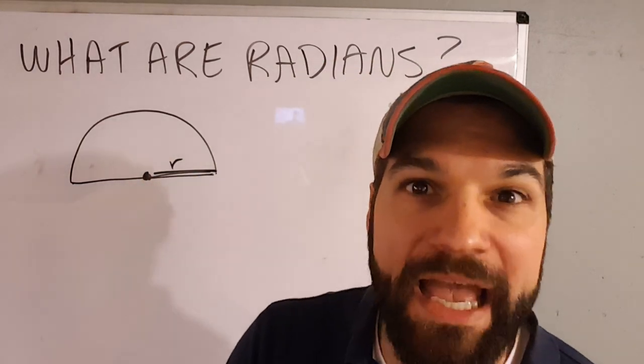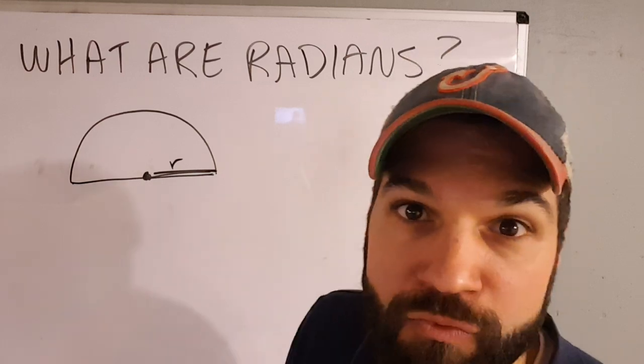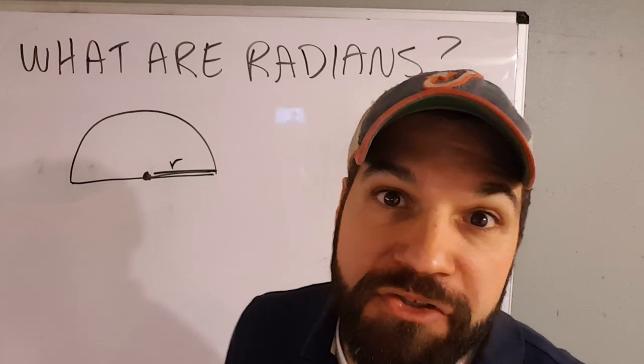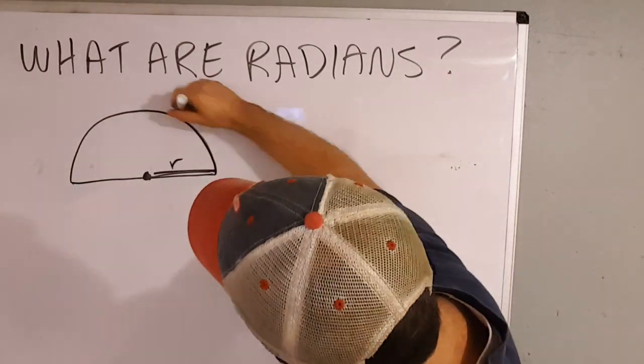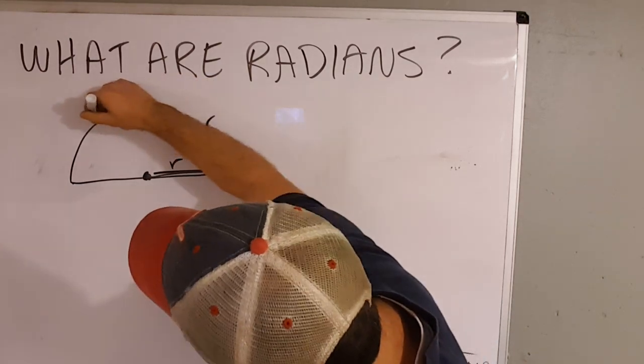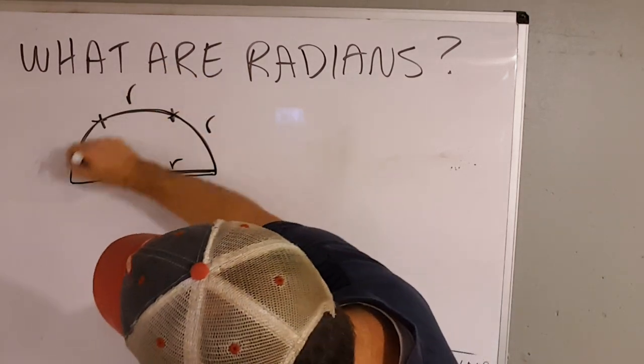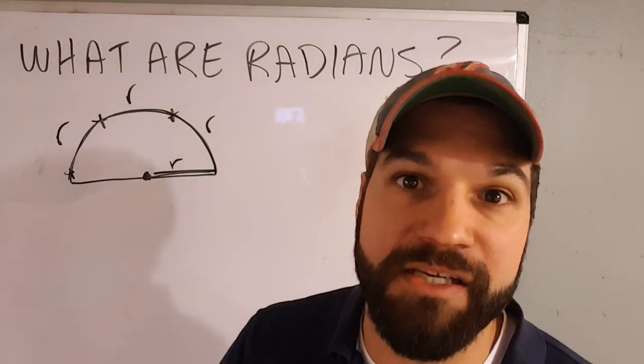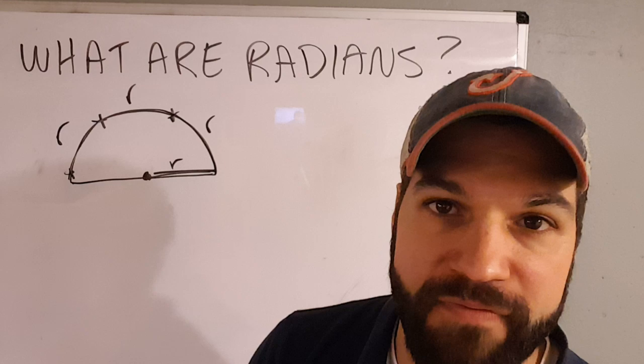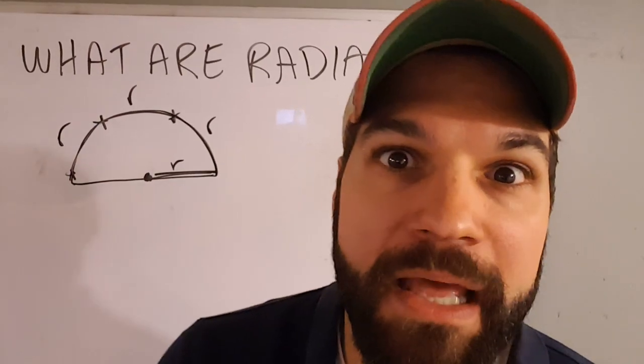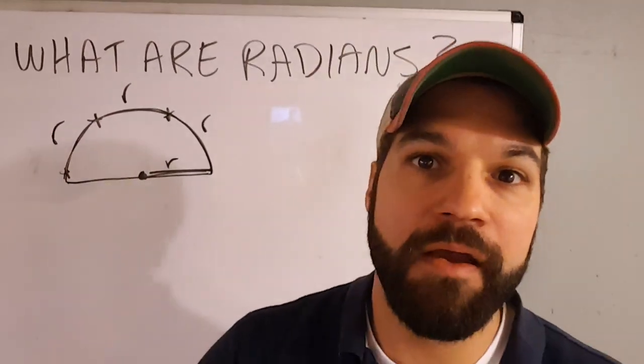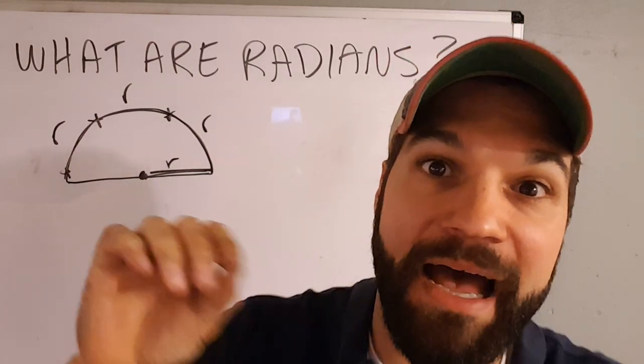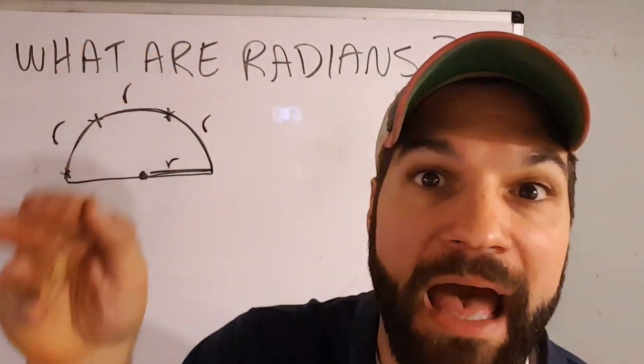Guess how many radiuses, radii, guess how many radiuses go around half a circle? Let's see. One radius, another radius, and another radius. About three radiuses or three radii go around half of a circle. Guess how many exactly go around? Pi. Pi is the number of radii that wrap around half of a circle.